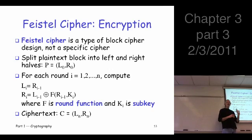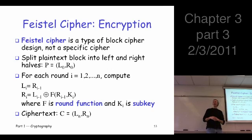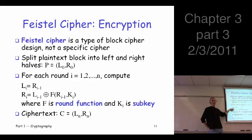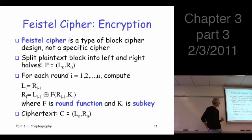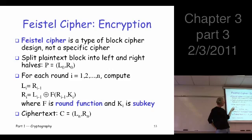Now we go through some number of rounds, performing the following step. If you say it in words it's not so bad: the new left half is equal to the old right half, exactly. The new right half is equal to the old left half XOR'd with a function of the old right half and the key. This is the round function. You do this N times, and what you end up with is LN and RN — that's your ciphertext.